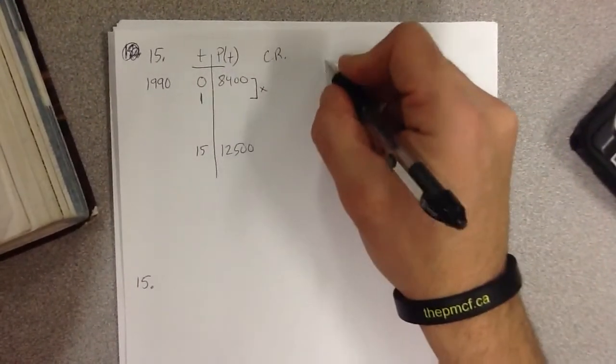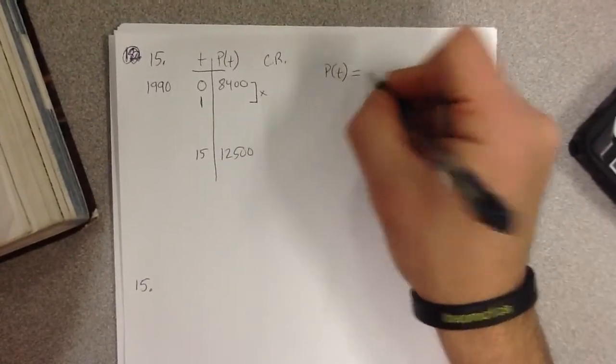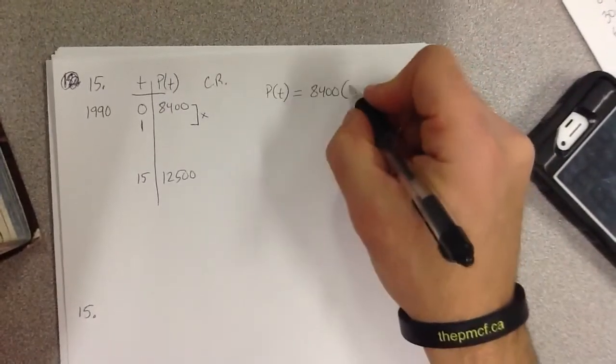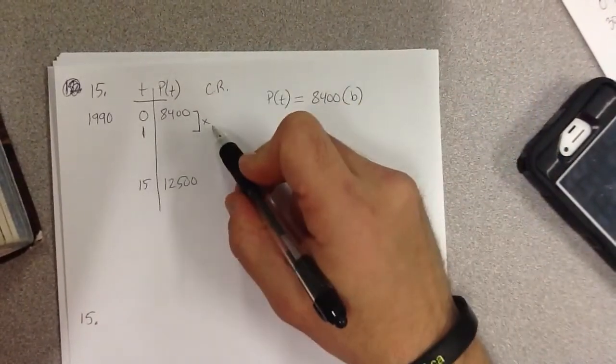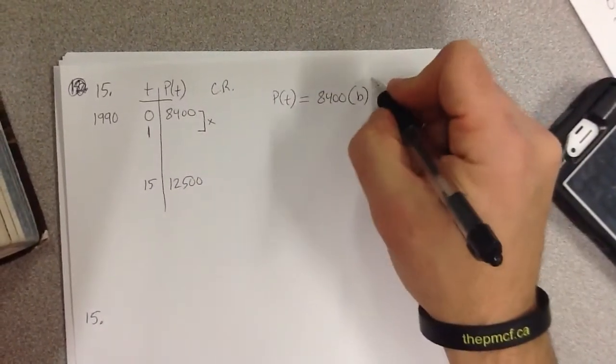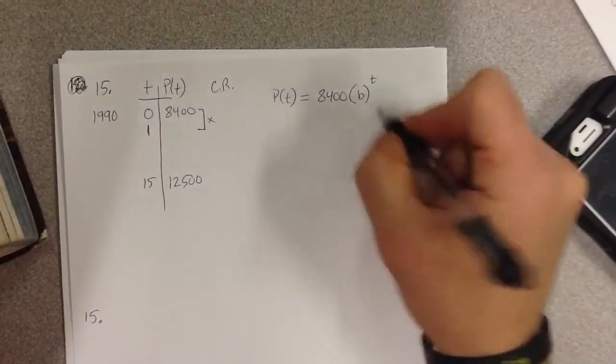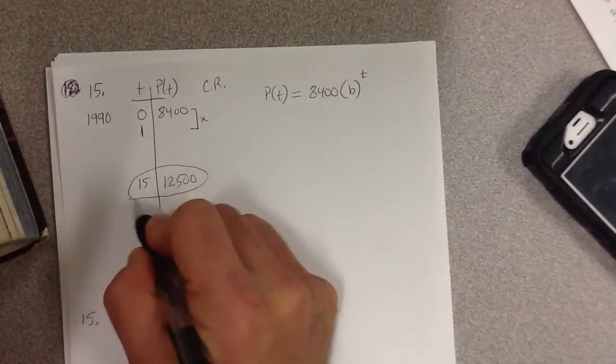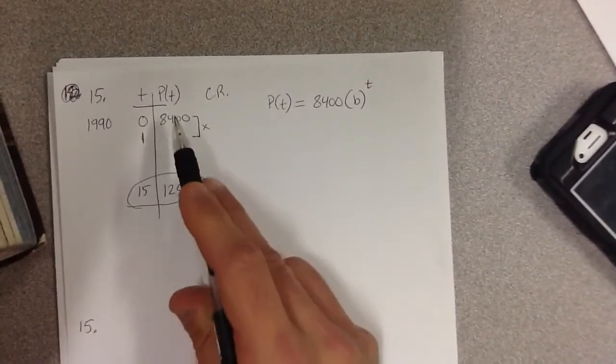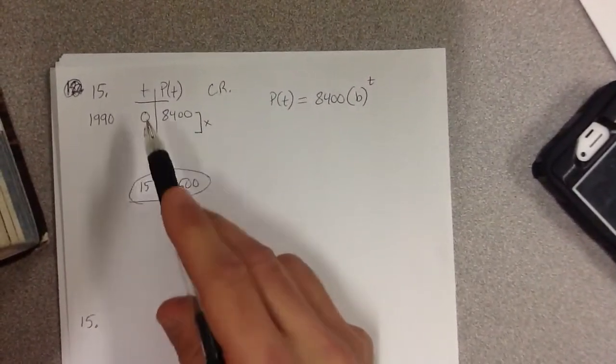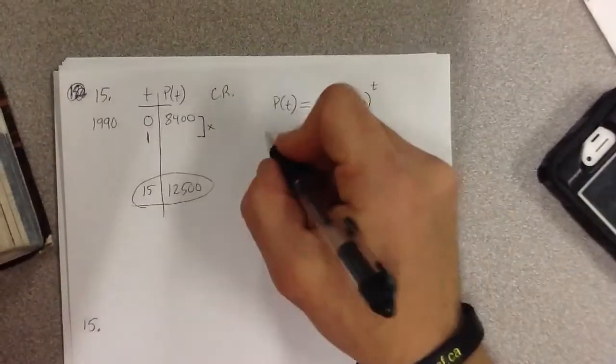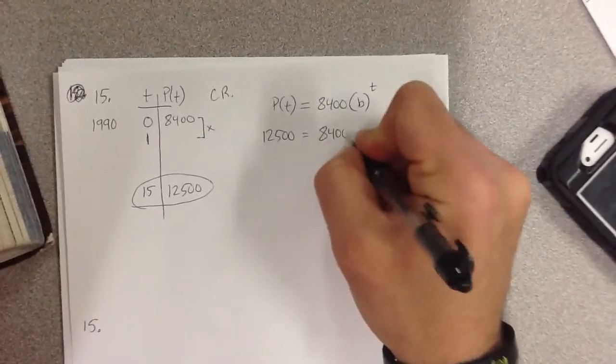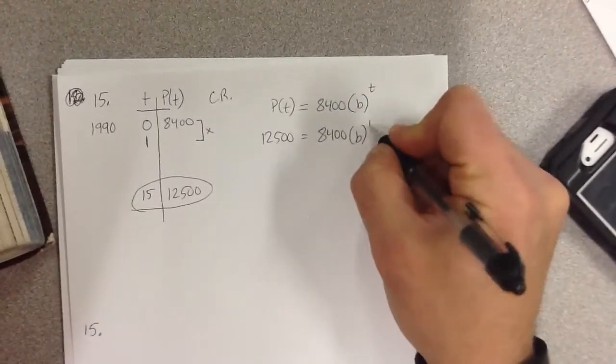So how do you come up with a function for this population as a function of time is equal to well, 8,400 is the starting the base or the common ratio. I don't know. That's what I'm trying to figure out to the power of time. So it doesn't really tell us much, but it does give us an extra piece of information. It tells us when population is 12,500, the time is 15. So I'm going to plug that in here. This is going to be 12,500 is going to be equal to 8,400 times B to the power of 15.